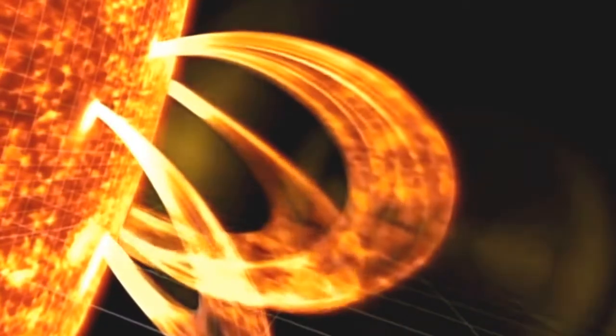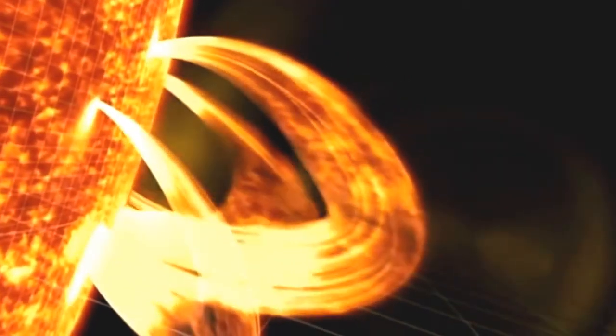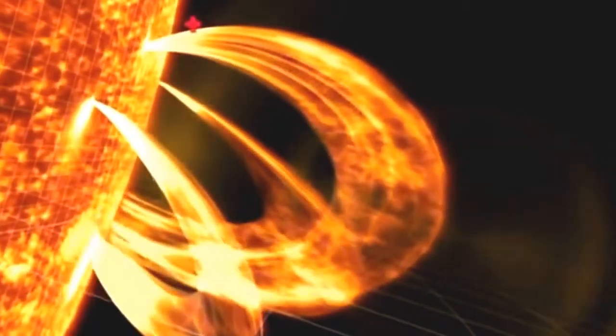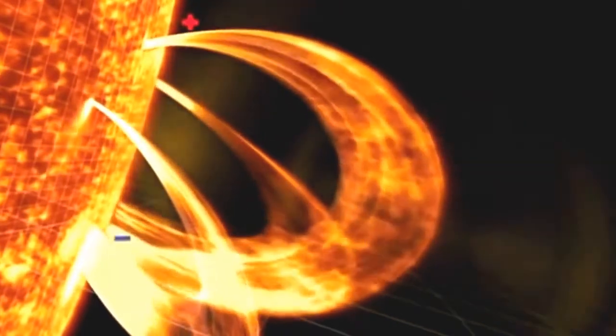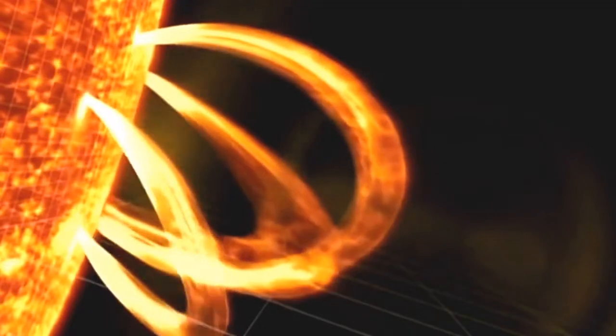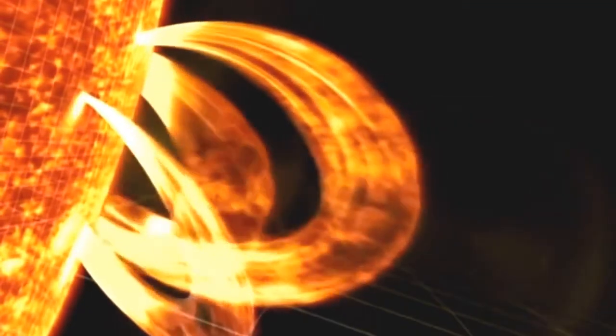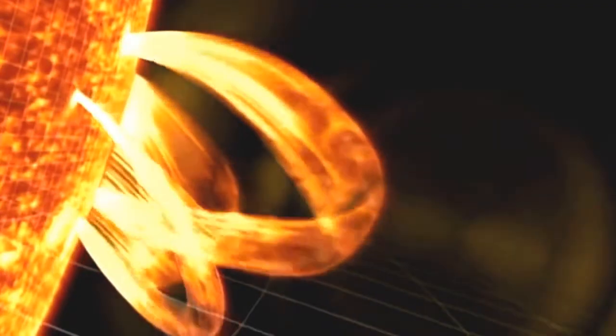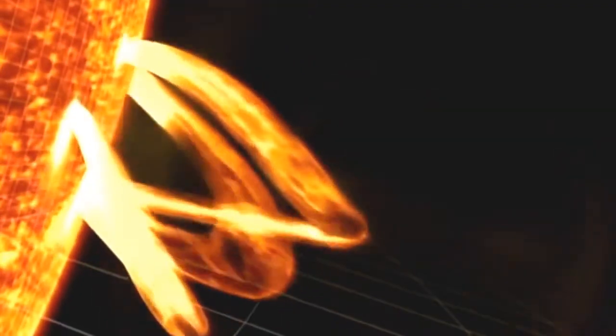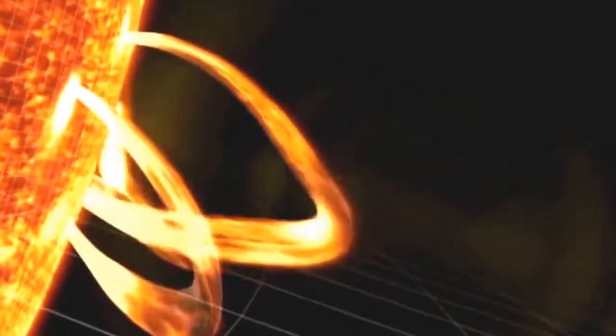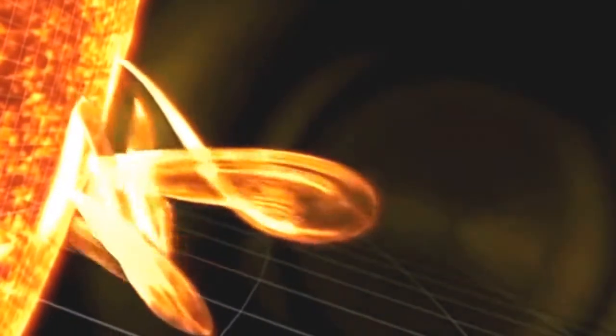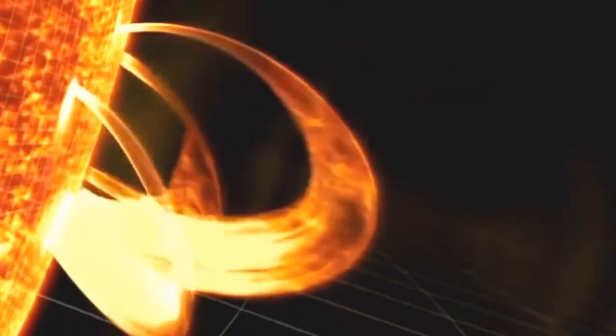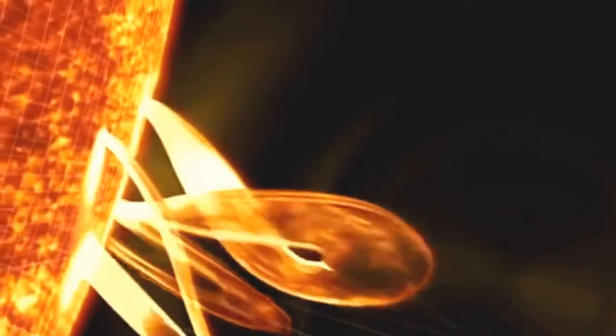As field lines emerge, they form loops. One end has a positive pole, and the other, a negative pole. Turning plasma beneath the surface twists these loops, pumping them with energy. If twisted enough, positive and negative parts of the loops cross. When they do, they short circuit with a tremendous explosion.